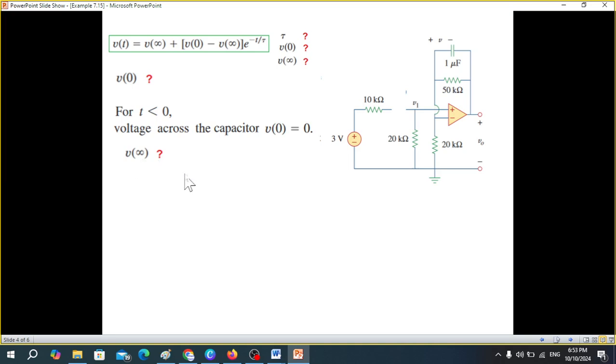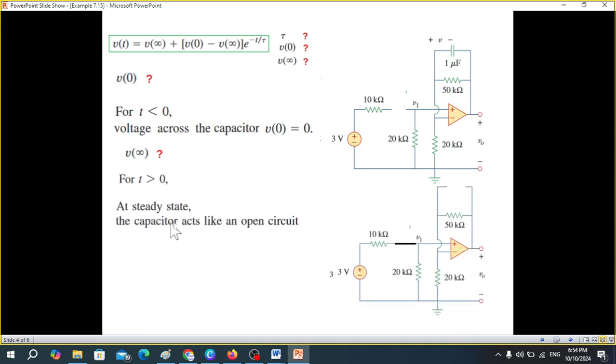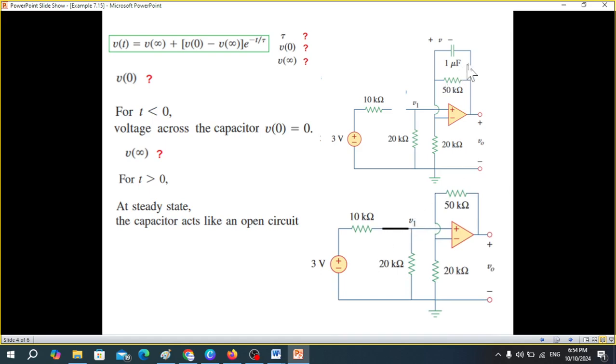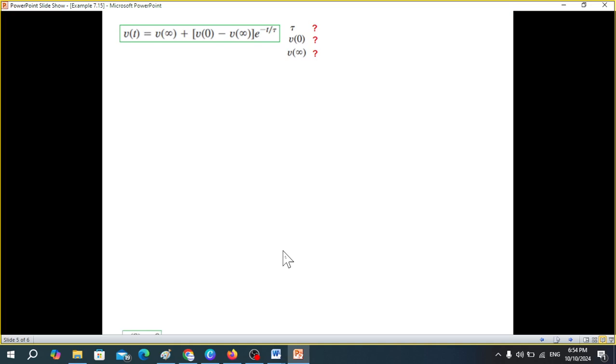Then we come to V infinity, so that we have to close the switch. So when we close the switch, for t greater than 0, the switch is closed. And now we have to find V infinity, the voltage to which the capacitor gets charged. Now at steady state, the capacitor acts like an open circuit, so first of all we keep it open. And then if you remove the capacitor, the whole thing, to make it simple, so this is the simplified circuit.